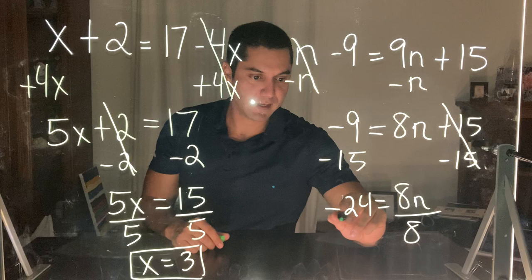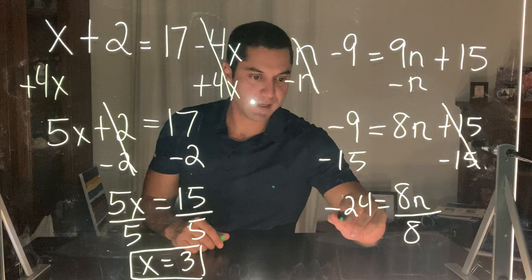Now I'm down to a one-step equation. From here I just divide both sides by 8. Negative 24 divided by 8 is going to give me negative 3. 8n divided by 8 gives me n. So my answer is n equals negative 3.